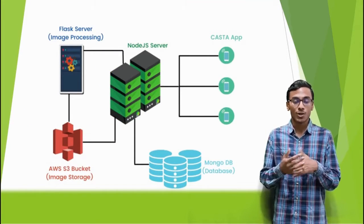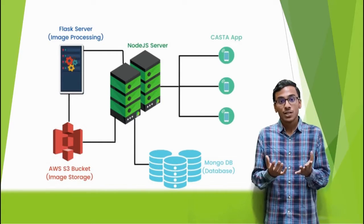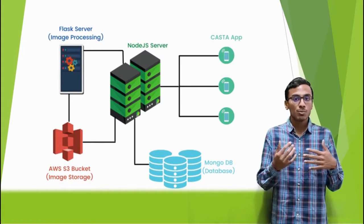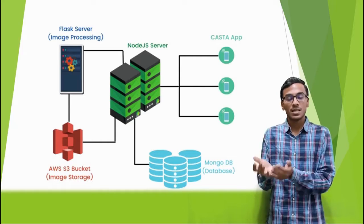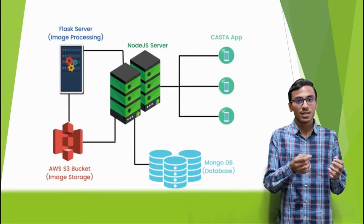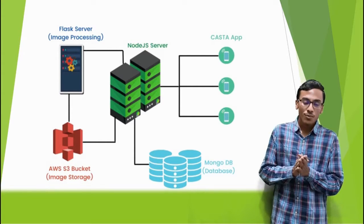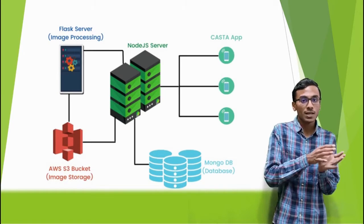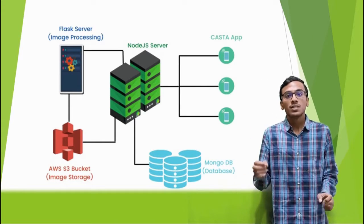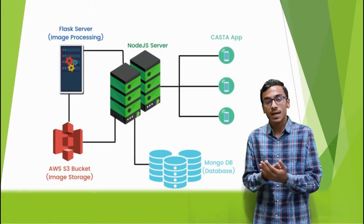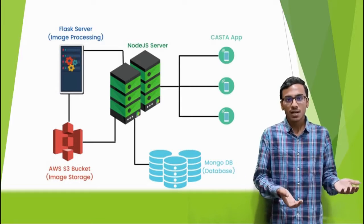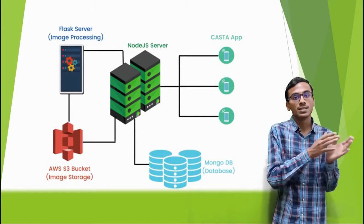Now let us look at the mobile aspect. Mobile computation has come to another level where you can run PC-level applications right on your phone. The mobile architecture is divided into two parts: the front end, which is the UI/UX that the user sees and uses, and the back end, which is the background application running on a server that contains all the logic and processing and returns the desired result.